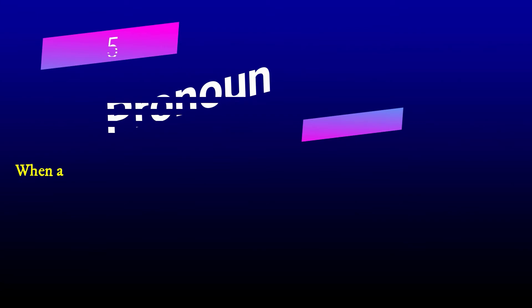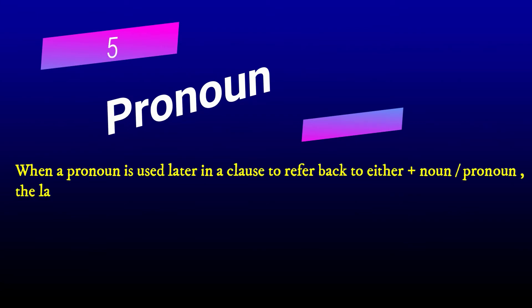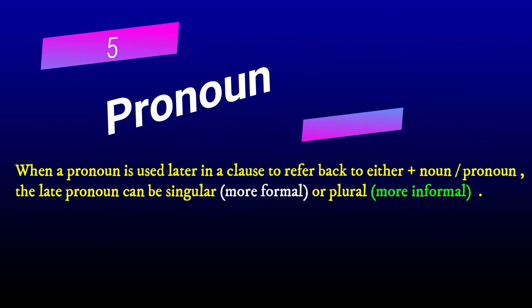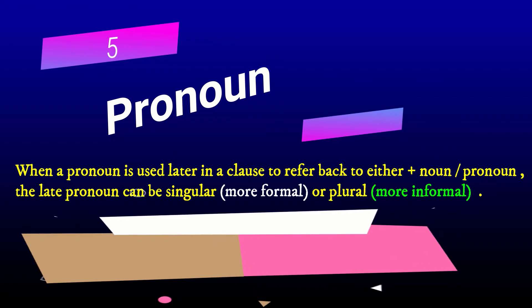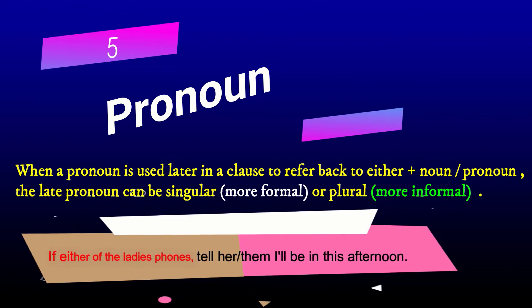Number 5: Pronoun. When a pronoun is used later in a clause to refer back to 'either' plus noun or noun, the pronoun can be singular (more formal) or plural (more informal). For example: If either of the ladies — whom — tell her or them — I'll be in this afternoon.